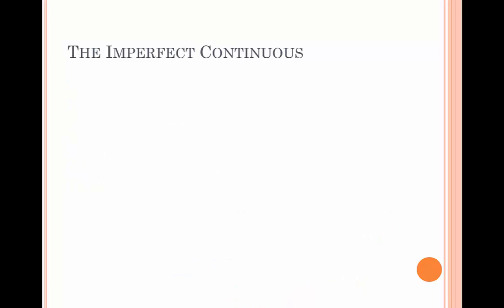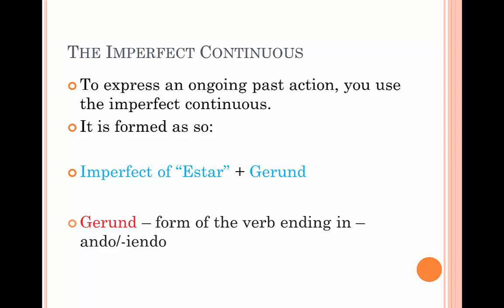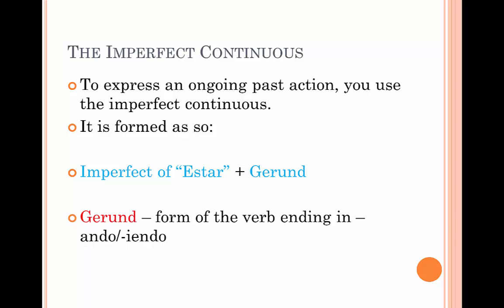Now we're going to have a look at the imperfect continuous. To express an ongoing past action, you have to use the imperfect continuous. So this is how we form it. We take the imperfect of estar and add the gerund. Now the gerund is the form of the verb which ends in either ando or iendo.